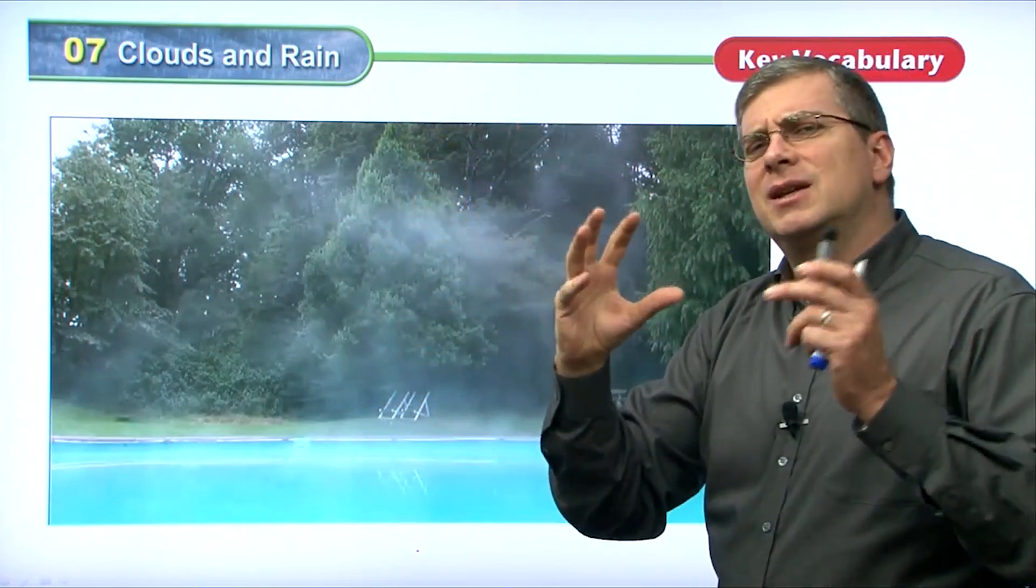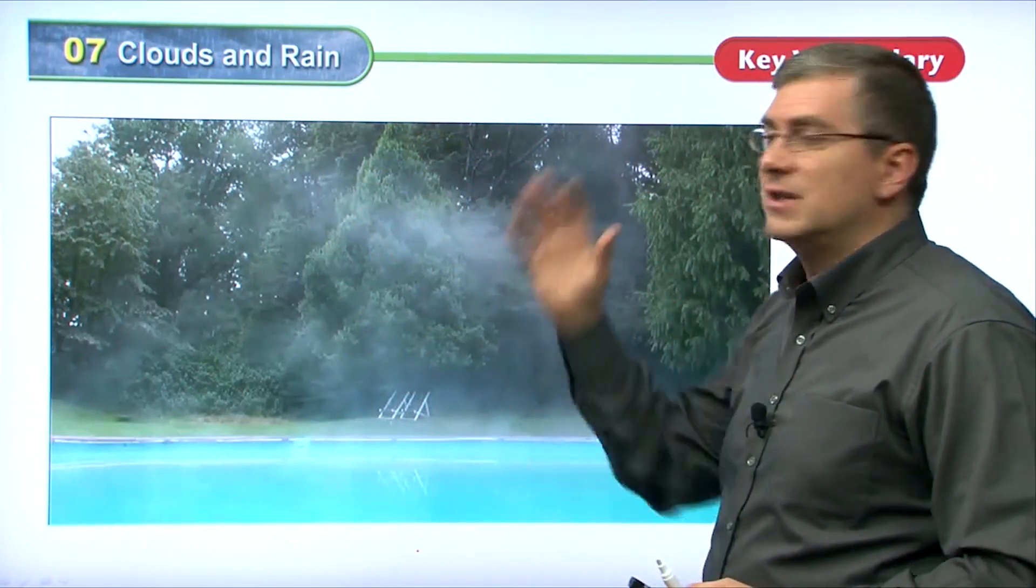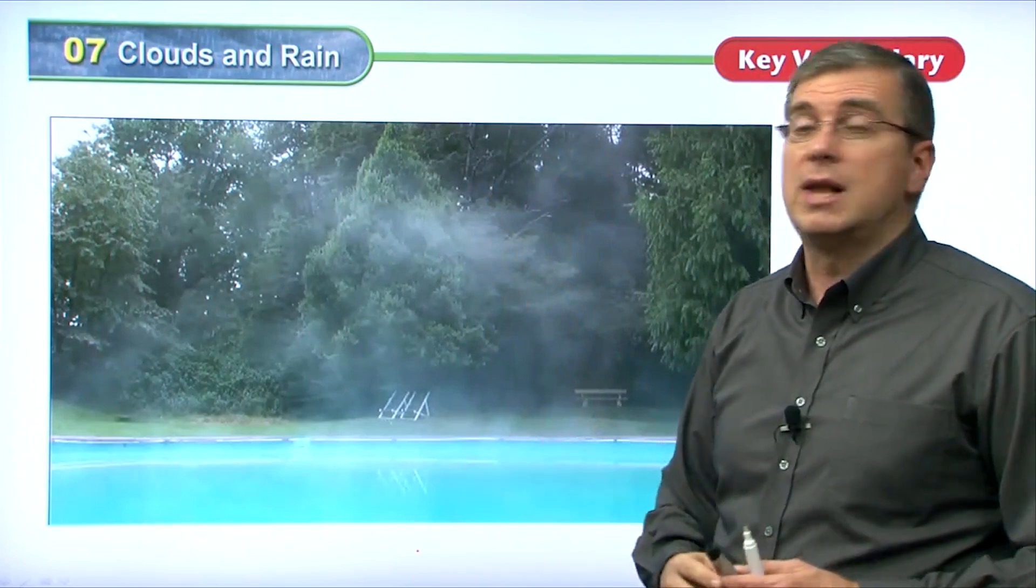And this is what's happening. So this water vapor will rise up into the air. It will go into the sky, and it will condense a little bit and form clouds. And that's where we can see clouds or water vapor in the sky. Those are clouds.